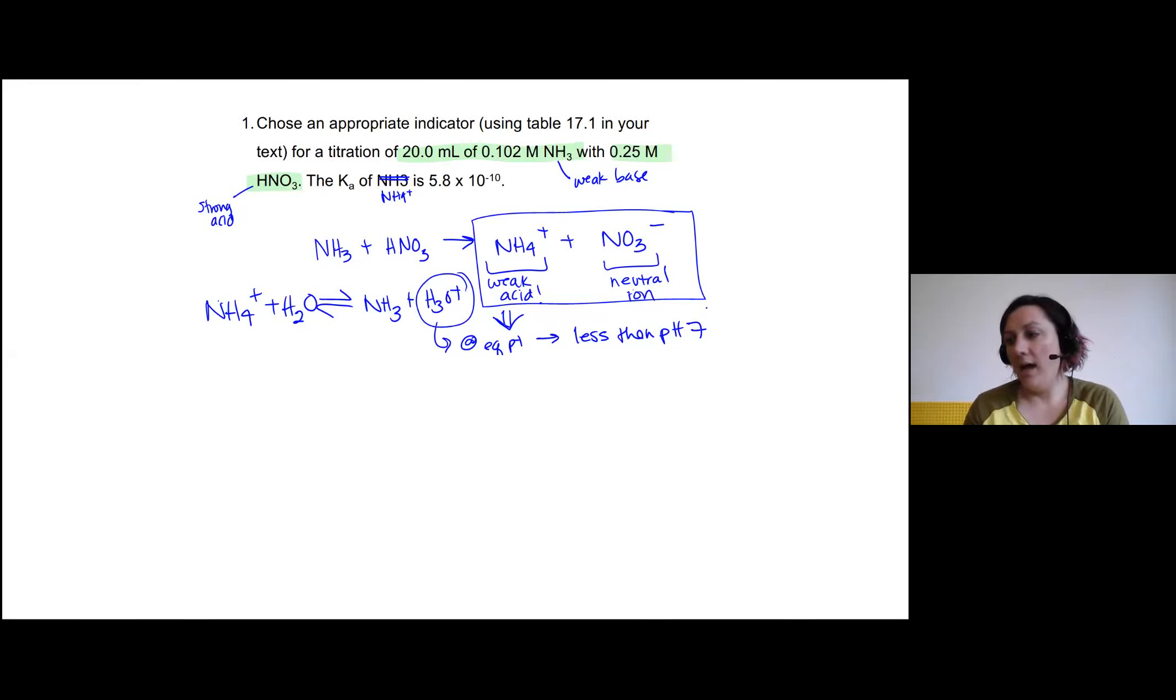Okay, let's solve this problem. We're going to start from the equivalence point, our imaginary equivalence point, and we need to find out some information about it. We need to know what is the concentration of our ammonium. So, let's write this out.